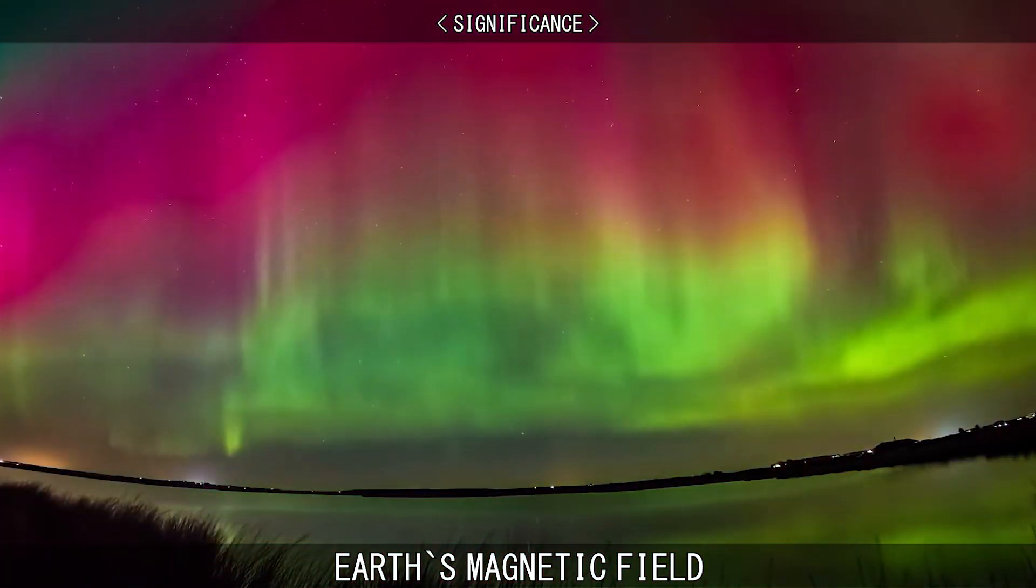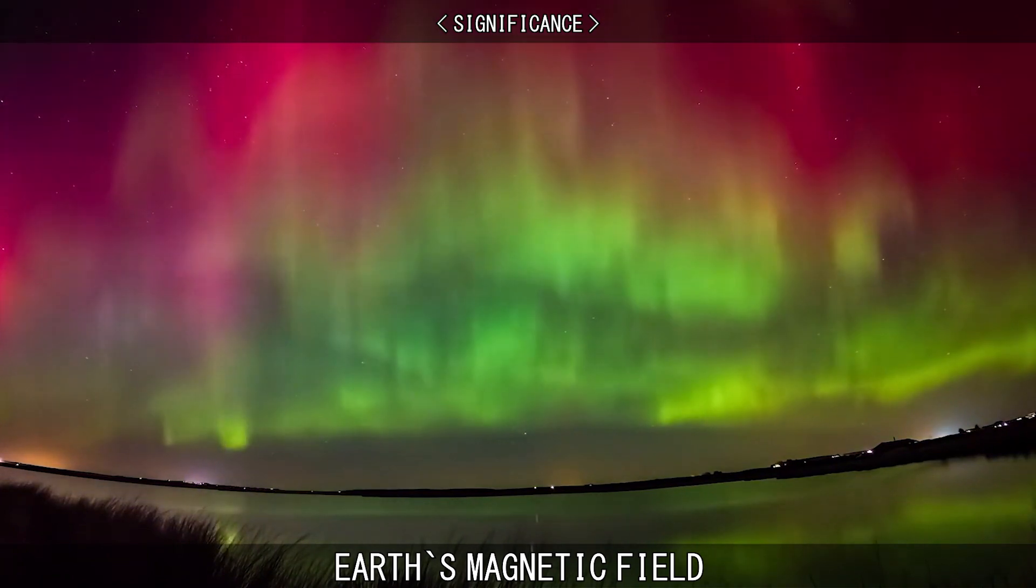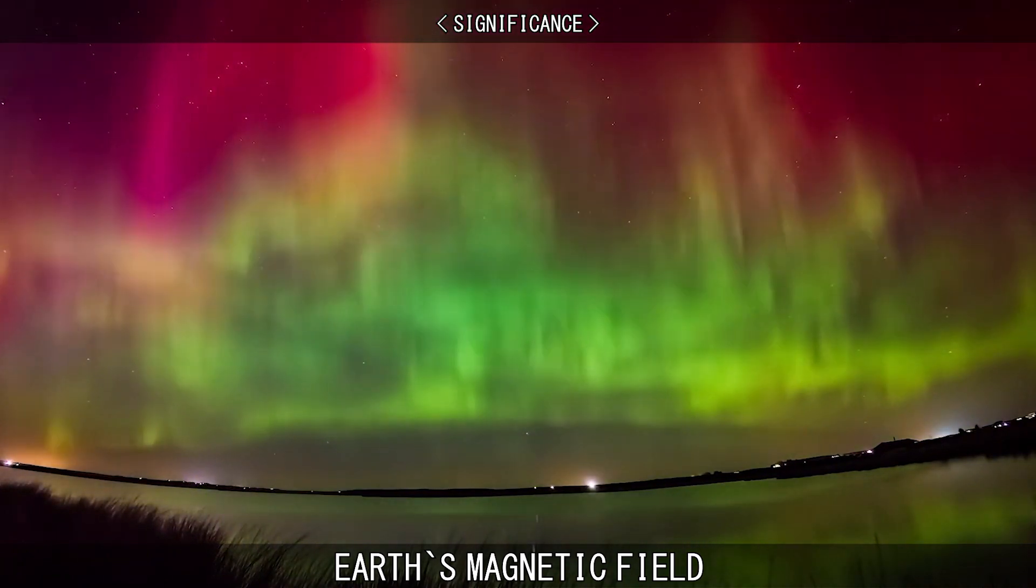The interaction of solar winds and the magnetosphere, in some instances, causes what is known as the northern and southern lights.